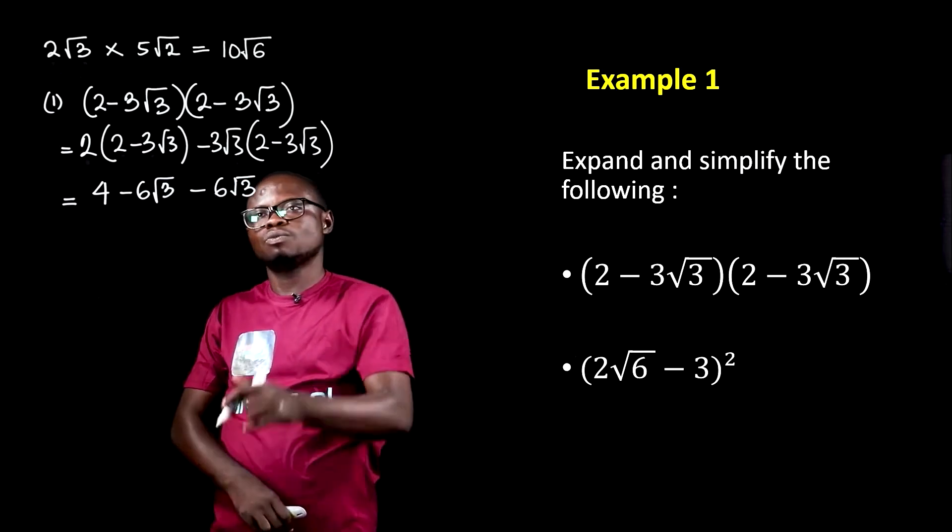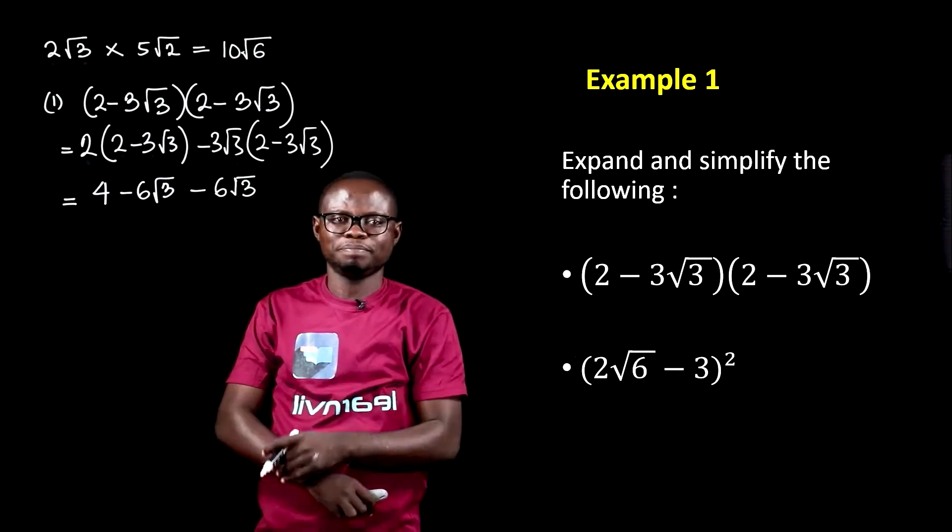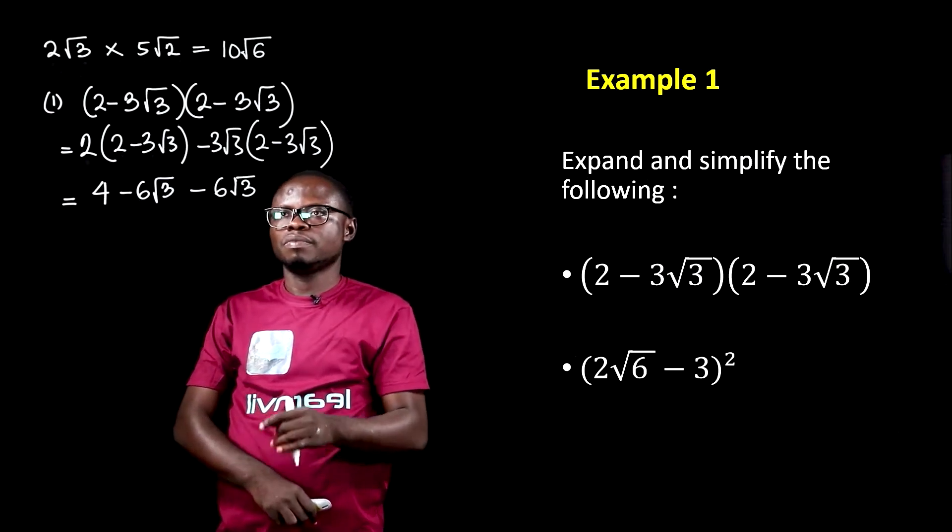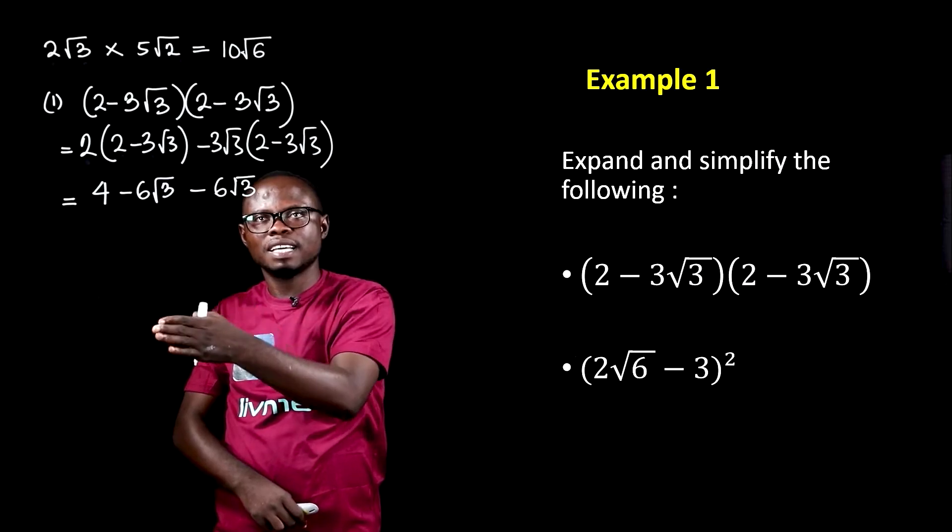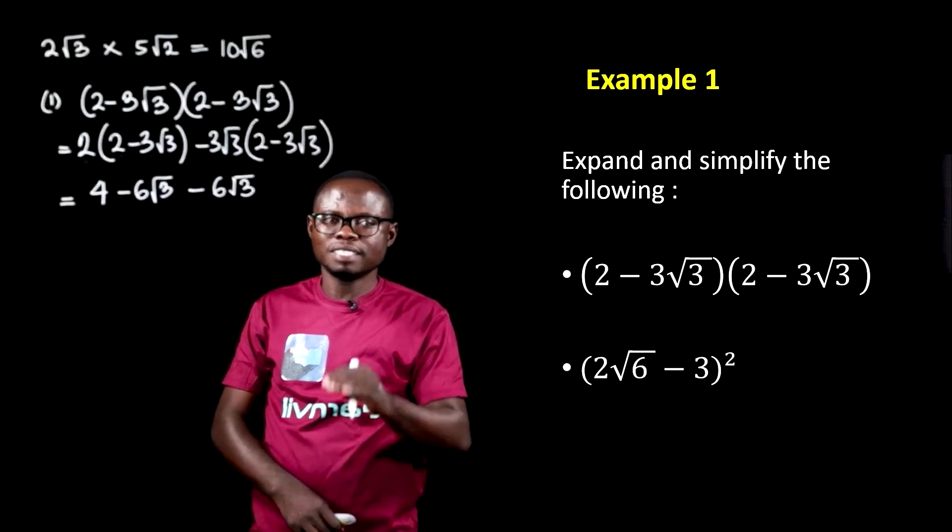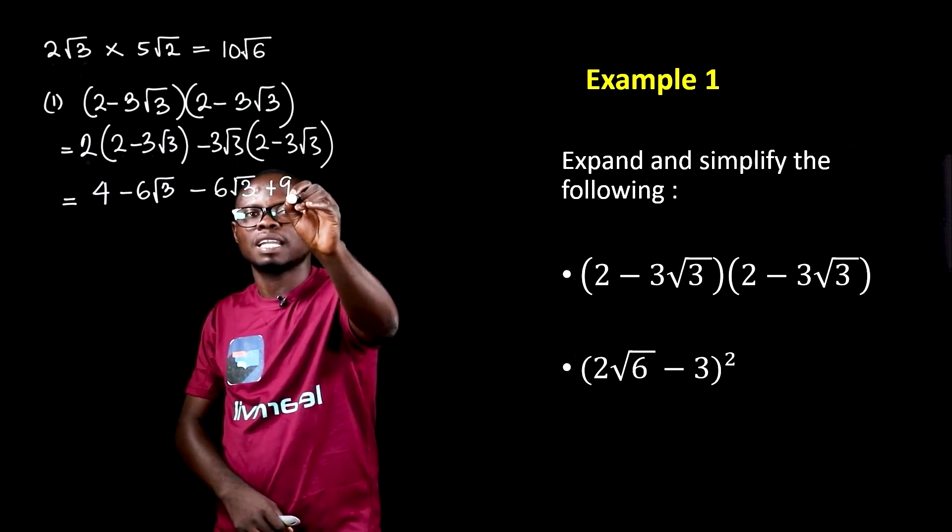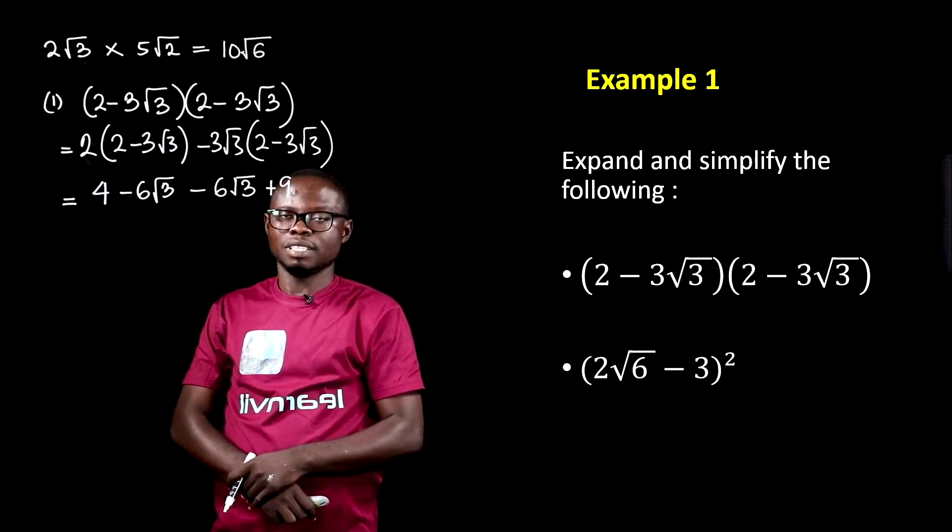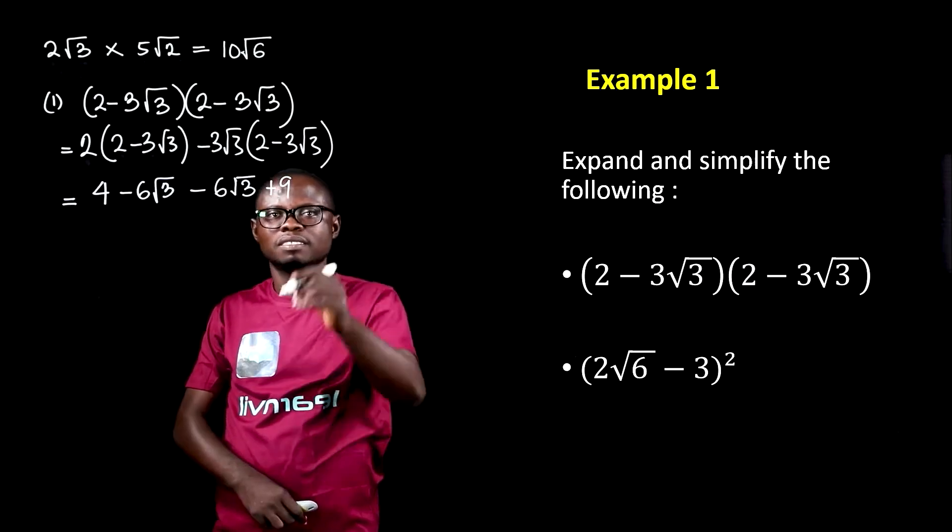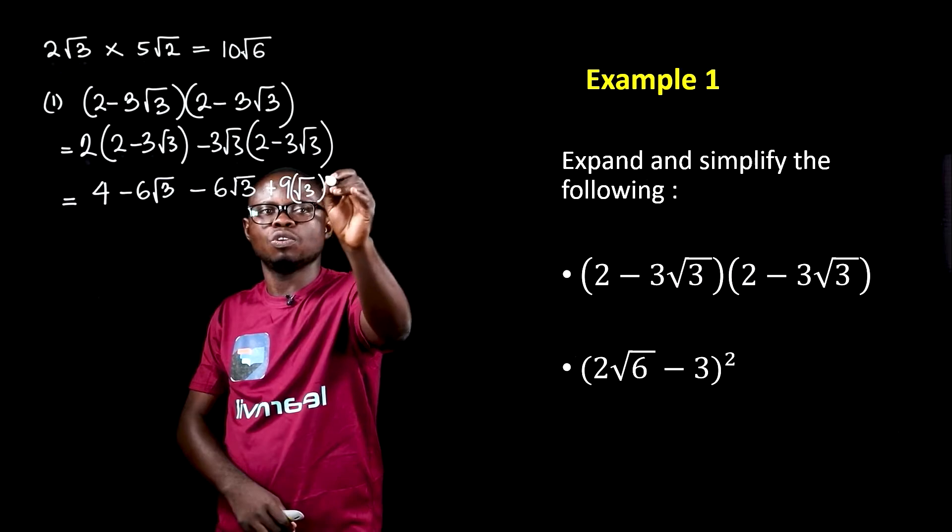Then we multiply minus 3 root 3 by minus 3 root 3. In this case, they each have an outside and then an inside. So outside, outside, inside, inside. So outside, minus 3 times minus 3 gives us plus 9. And then, root 3 times root 3, remember, gives us root 3 all squared.